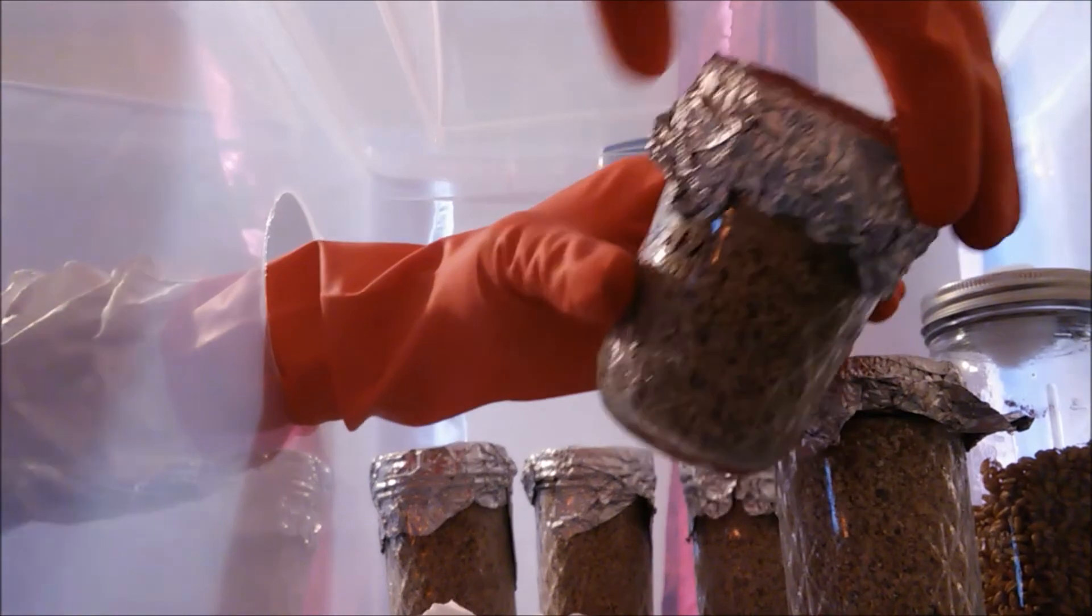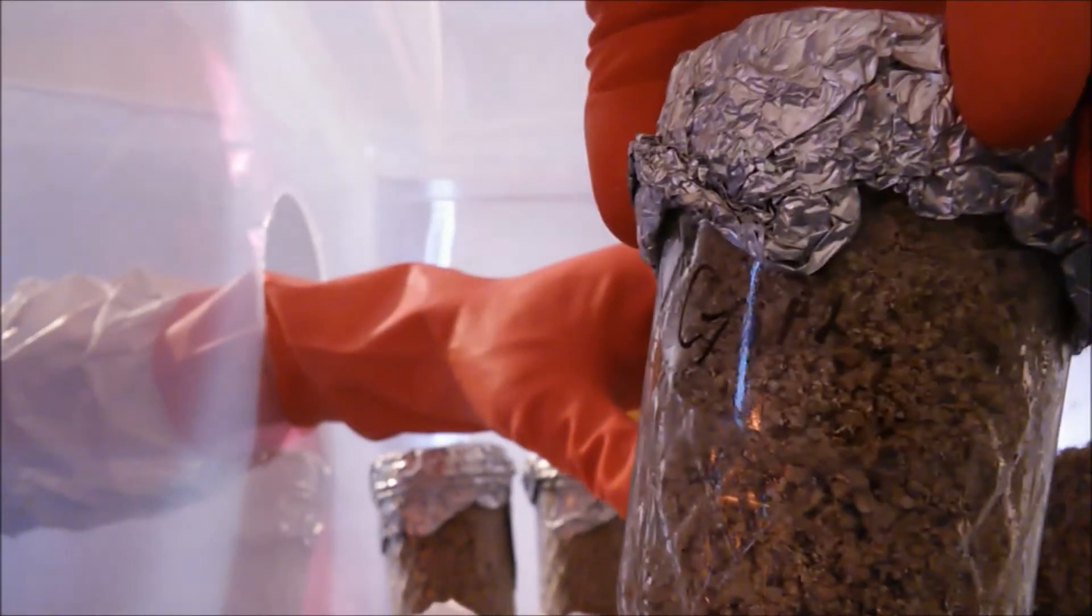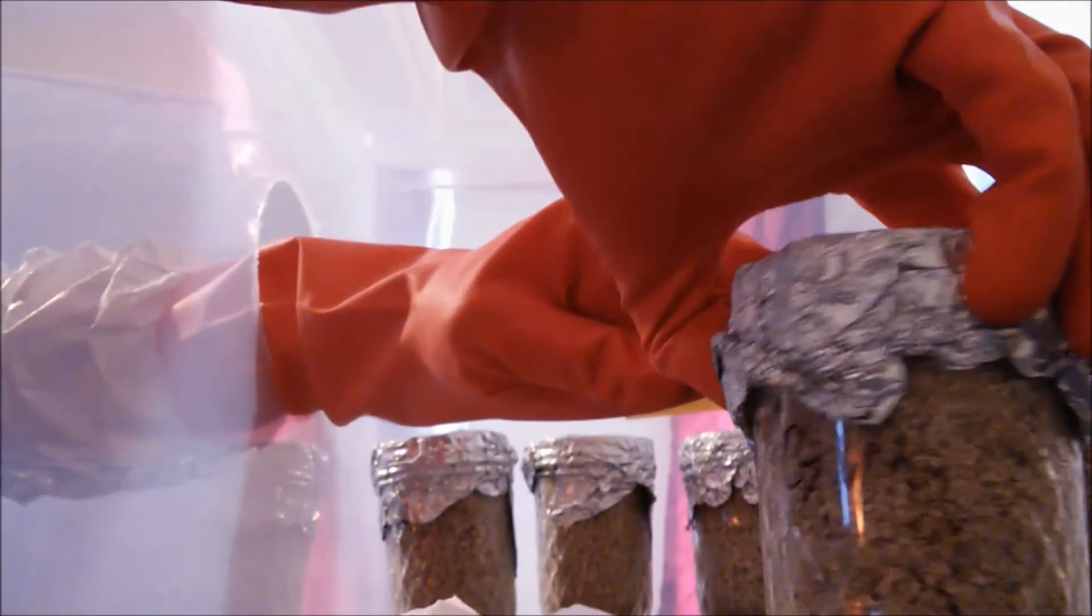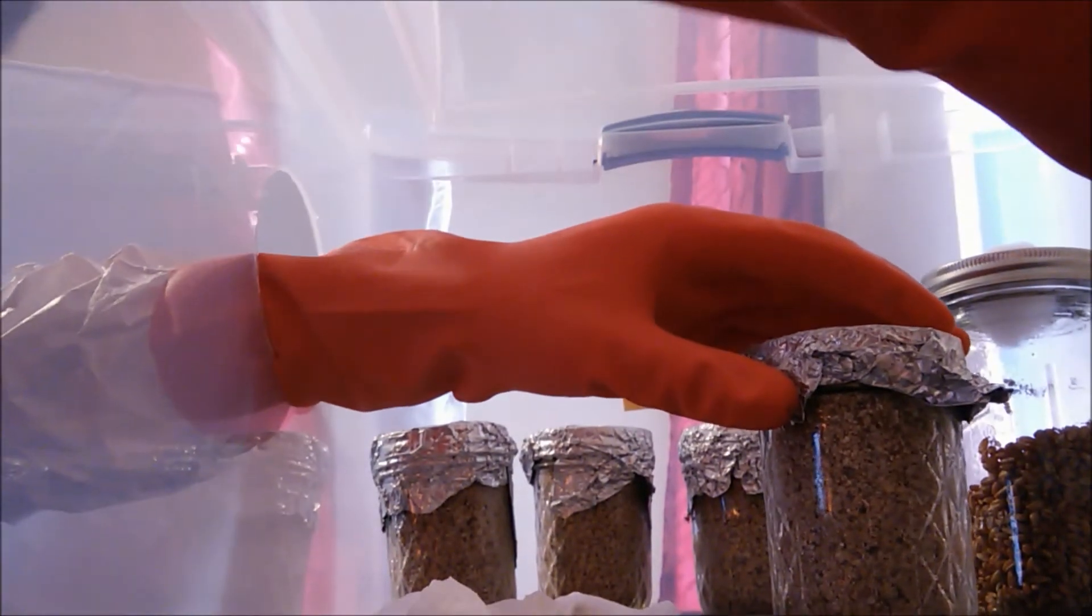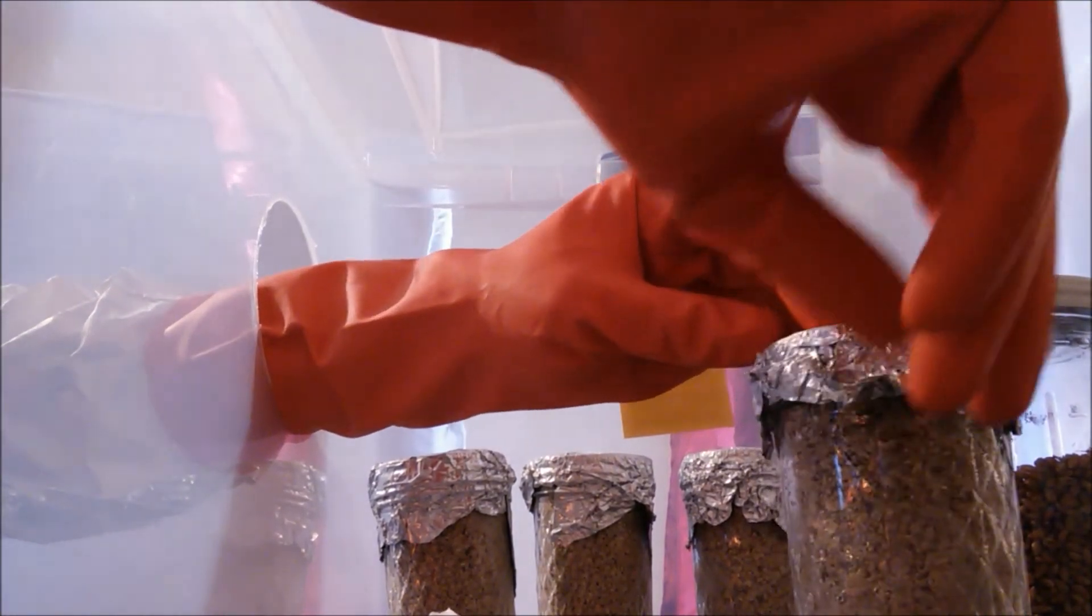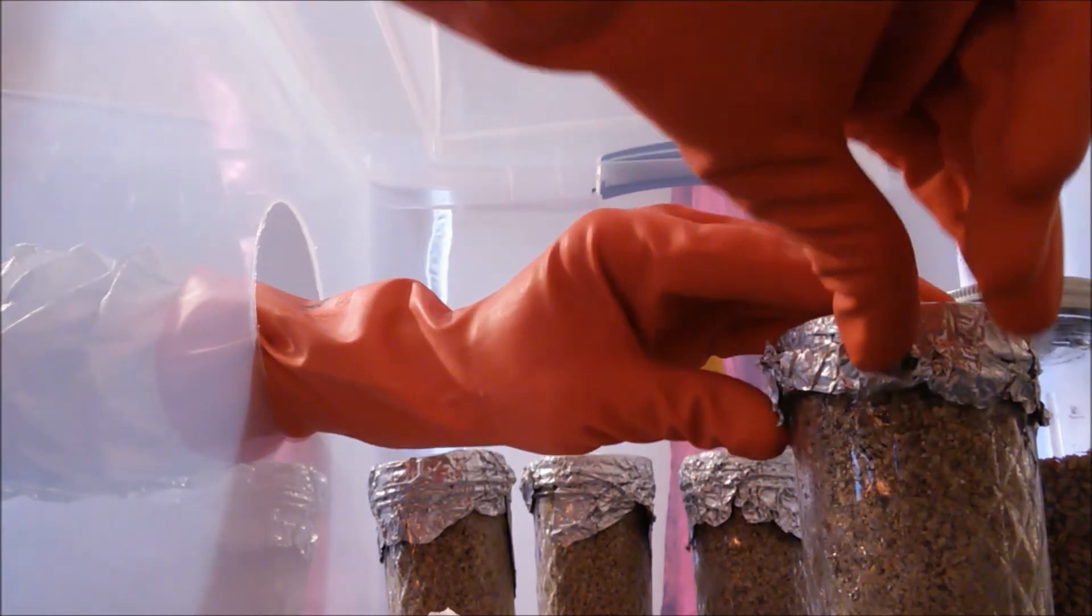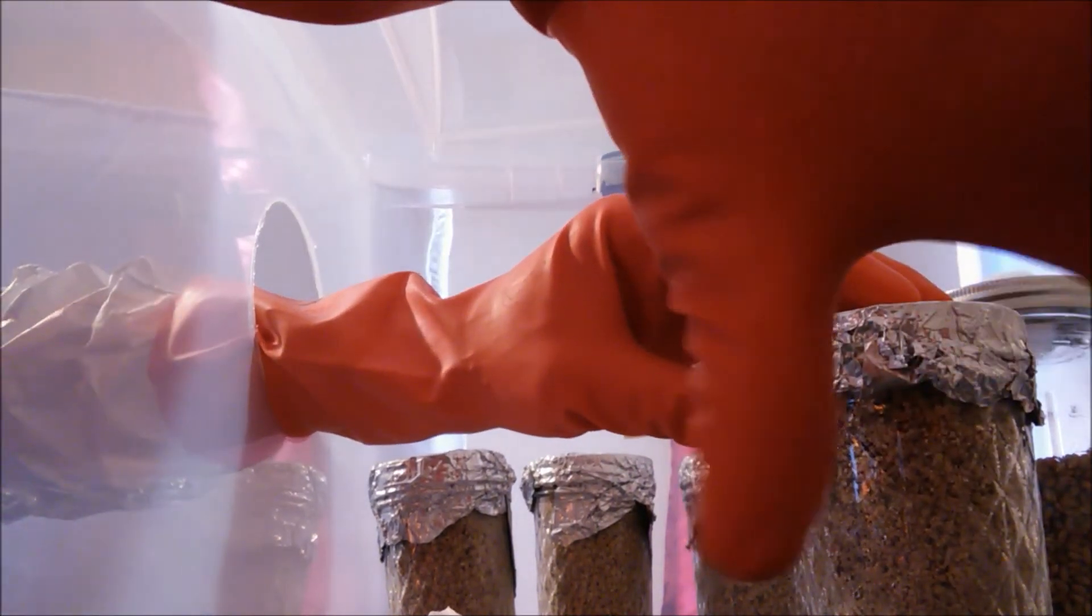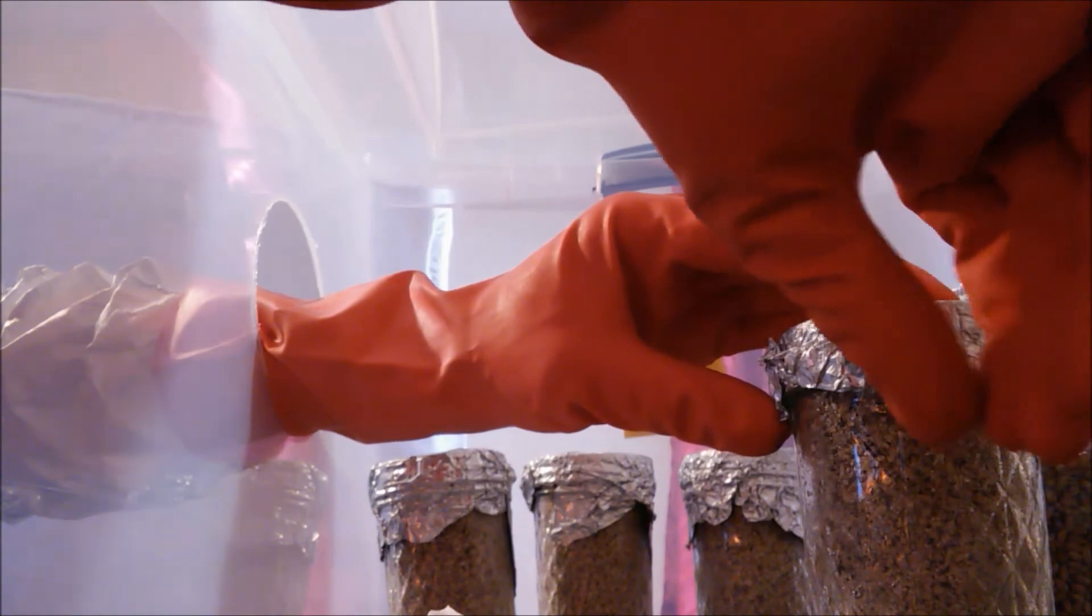Once you're done injecting your jar, just cover it back up with the aluminum foil so nothing can get back in. Leave it in a warm area, a little bit warmer than room temperature, to incubate and watch until the mycelium runs across the whole thing.